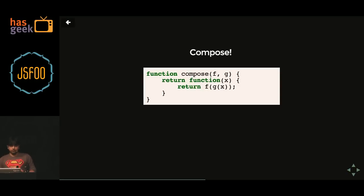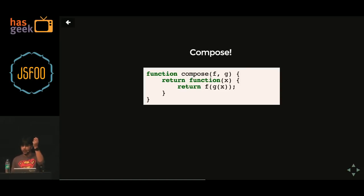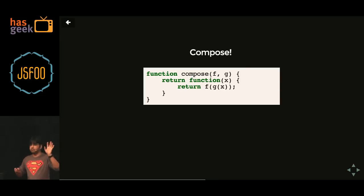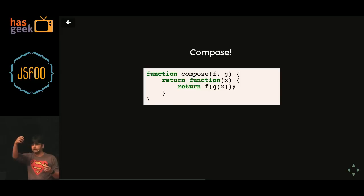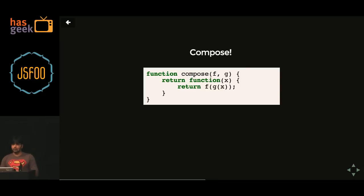Compose — composition of functions. Here we have a compose function which takes two functions f and g and returns one more function expecting value x. Finally it returns f(g(x)). If you have compose(x, y), it evaluates from right to left: it executes y first, whatever value results is applied to x, and finally you get the result. This is composition and is very useful to write modular programs.